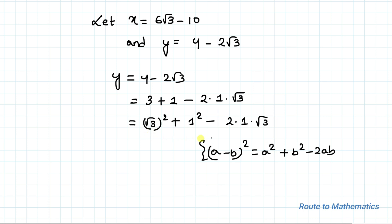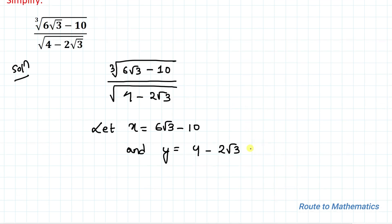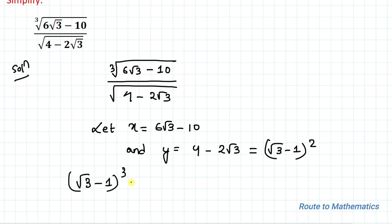...the expression is in the form of a² + b² - 2ab, so we can write y = (√3 - 1)². The value of y equals (√3 - 1)². Now, since the denominator is (√3 - 1), there must be some relation with the numerator. Let's check (√3 - 1)³ using the identity for (a - b)³.